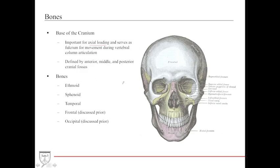The base of the cranium must be strong and durable. A basal cranial fracture puts you at significant risk for herniation, increased intracranial pressure, significant bleeds, and other serious sequelae. The bones of the base of the cranium include the ethmoid, the sphenoid, the temporal, as well as the frontal and occipital bones we just mentioned.